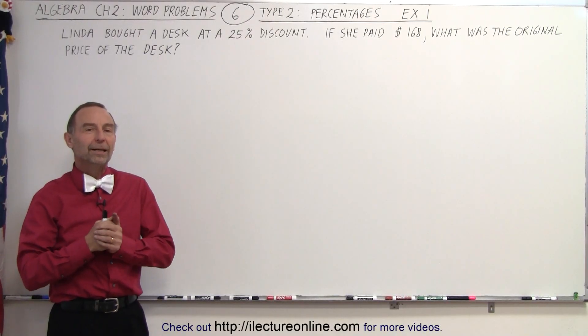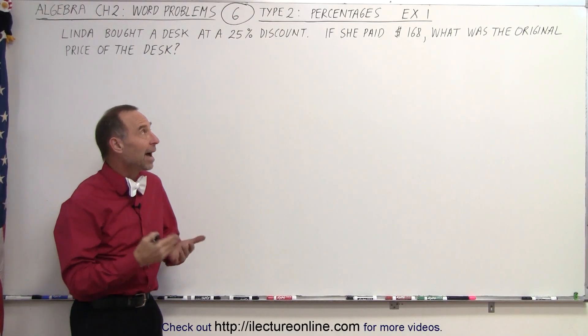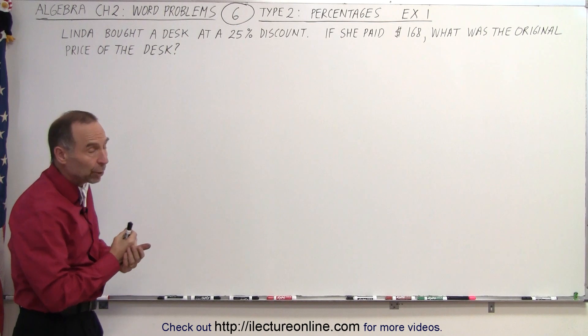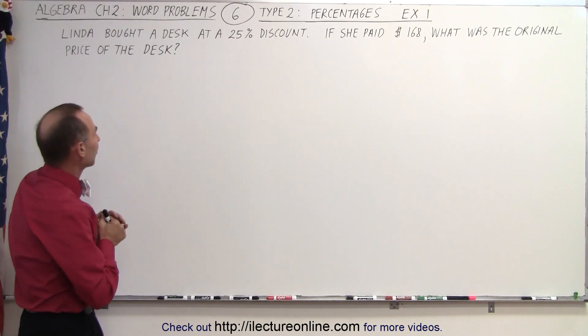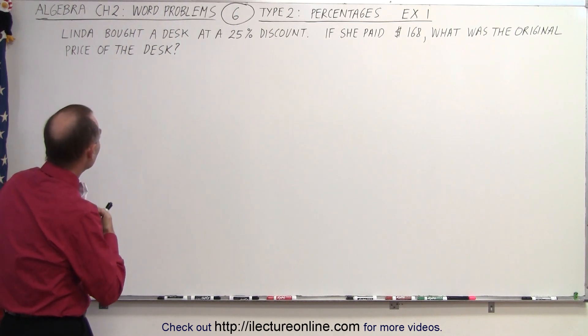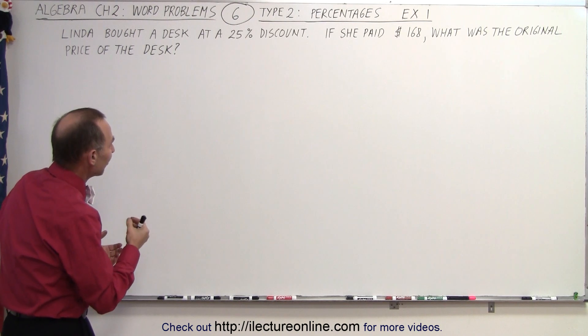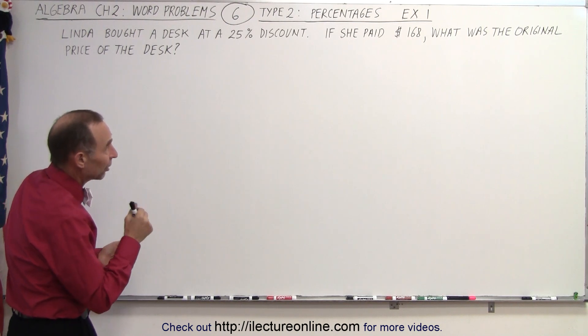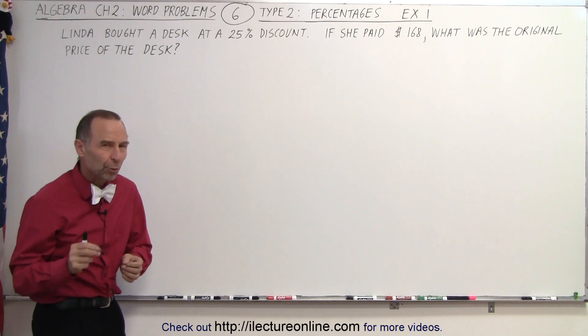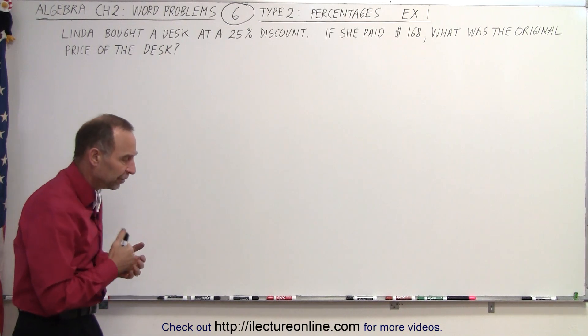Welcome to ElectronLine. Here we begin the second type of word problems dealing with percentages, and here's our first example. It says that Linda bought a desk at a 25% discount. If she paid $168, what was the original price of the desk?